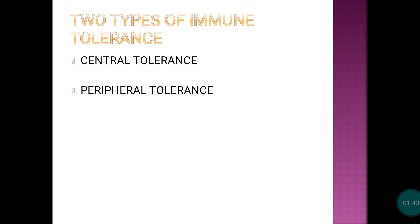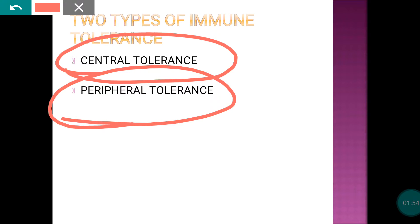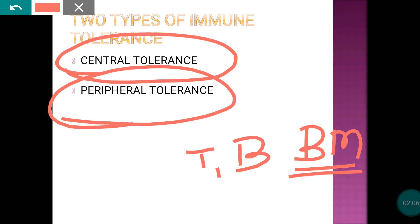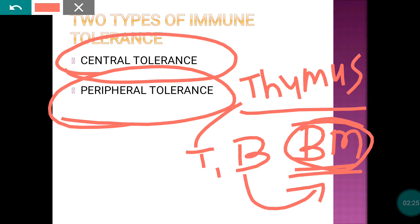Immunological tolerance can be of two types: central tolerance or peripheral tolerance. T cells and B cells are produced in the bone marrow. T cells mature in the thymus while B cells mature in the bone marrow. The thymus and bone marrow are known as the central organs of immunity, while the spleen, lymph nodes, and mucosa-associated lymphoid tissue are peripheral organs.